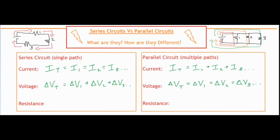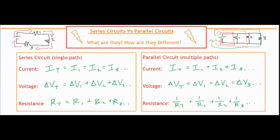Now for our final rule, let's take a look at the resistance. For a series circuit, the total resistance is simply the sum of each of the individual resistors. Because there's a single path or a single loop for the electrons to travel through, as they travel through they have to pass through each of the resistors. So in total, if you just sum them up, that's the total amount of resistance that each of the electrons experiences.